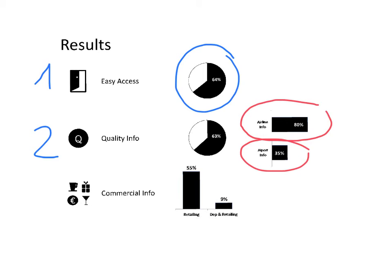And third, commercial information was available on 55% of those mobile websites. However, only 9% of those mobile websites combined departure information for passengers at the same time as retailing information.